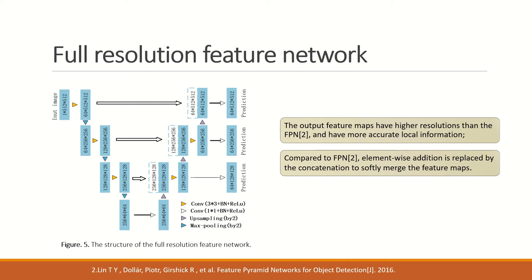To get more accurate local information for small fractures, we introduced the framework of segmentation networks — a classical encoder-decoder architecture. The encoder extracts global information, and skip connections with the decoder preserve local information. The highest resolution of the output feature maps is the same as the original image.